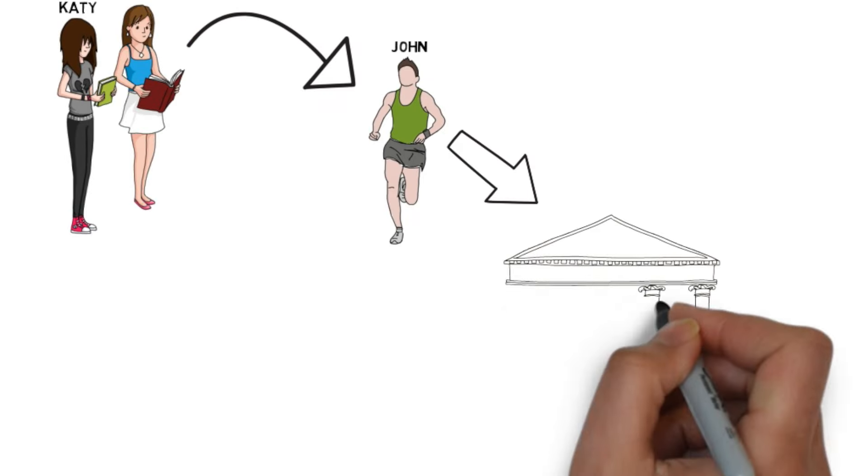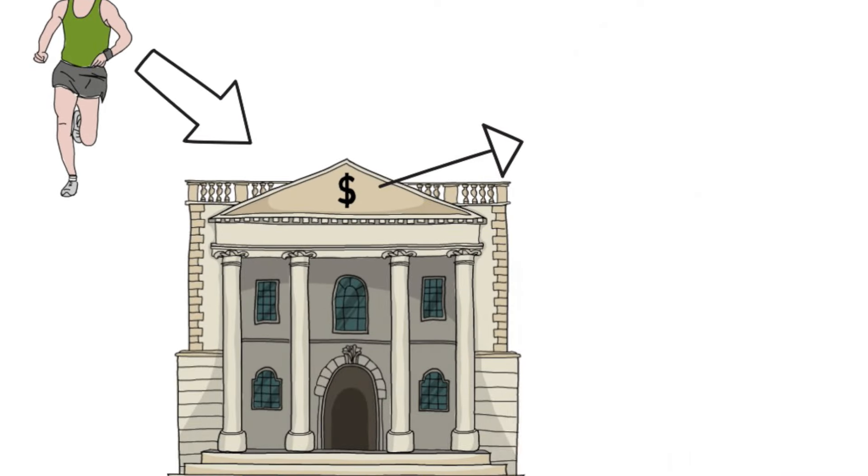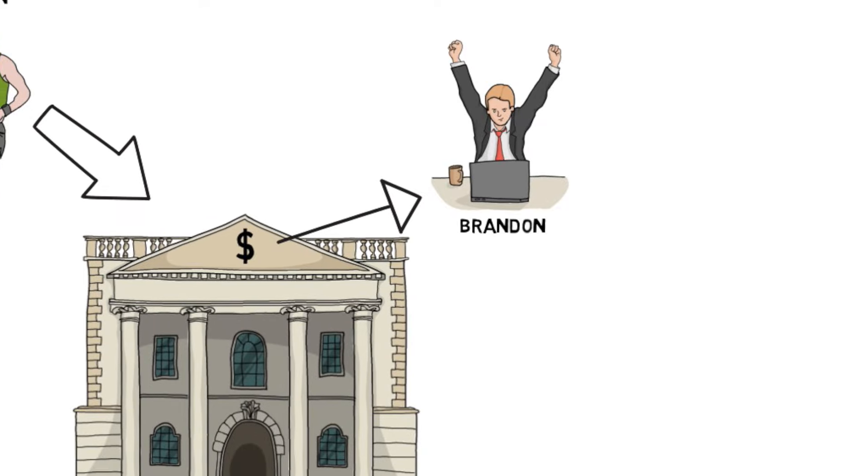John doesn't have any access to actually withdraw money from the bank, so he can't be accused of taking the money in the first place. Then finally, Brandon records the entry in the accounting system and generates a report showing the whole process.